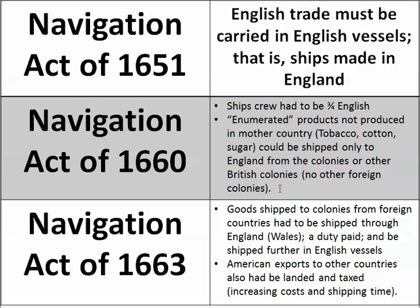That was tough for the American colonies because if a foreign country would pay more, they could make more money. So many colonists felt that was unfair. The Navigation Act of 1663 required that goods shipped to the colonies from foreign countries had to go through England or Wales first, where a duty or tax had to be paid, and then be shipped further in English vessels — costing more money. All this landing, taxing, and transferring between ships made goods much more expensive by the time they reached the colonists. American exports to other countries also had to be landed in Wales and taxed, increasing cost and shipping time.